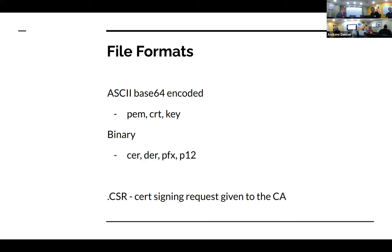There's the base64 ASCII format that you can literally just decode and look at the data. There are also binary files that browsers and applications use. A CSR is a certificate signing request — when you're making a certificate and you want it signed by somebody, which could be yourself if you have a certificate authority, or if you're running a website and want a real company to vouch for you. You make a CSR, give it to them, they sign it and return you the public key.